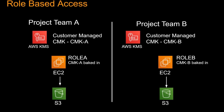Now that you've seen how a customer managed CMK can be backed into a role using encrypt and decrypt policy, how do you use it in a real-life project? Let's say you have project team A and project team B. Project team A has a customer managed CMK named CMK-A, and project team B has CMK-B. CMK-A is backed into the EC2 role for project team A — role A — so role A can encrypt and decrypt data using CMK-A, and that application is running in EC2 and writing data to S3. Only applications running with role A can decrypt data from S3. Similarly, for project team B, only the role with CMK-B can decrypt data from S3. That's how you keep two projects separate, even though they may share the same AWS account.